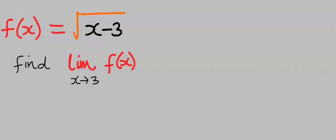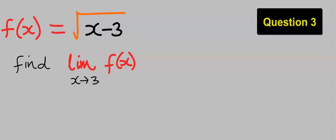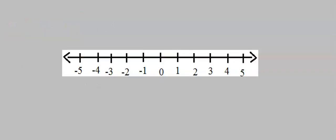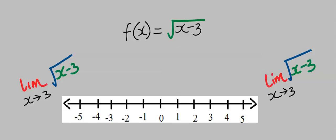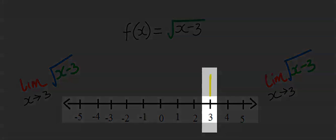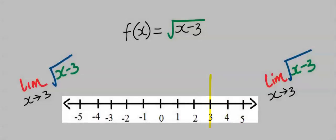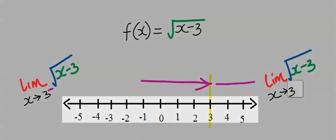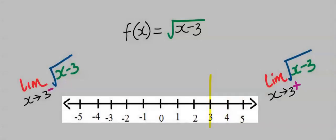Next, consider this question. If f of x is equal to square root of x minus 3, find the limit of f of x as x tends to 3. To understand this question, let's consider a number line. The first step is to locate 3 on the number line. Next, we are going to approach this limit from the left, and we are equally going to approach this limit from the right. Let us see what will happen as we make this approach towards 3.